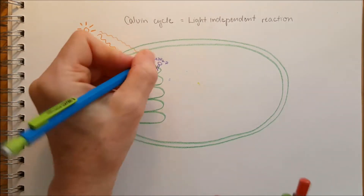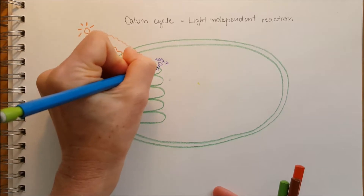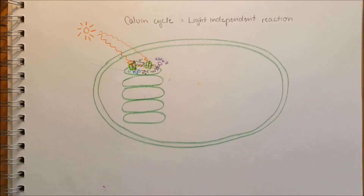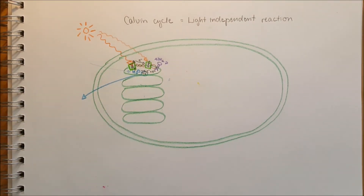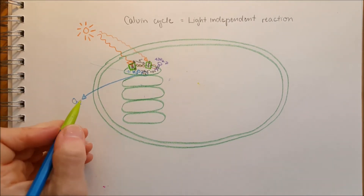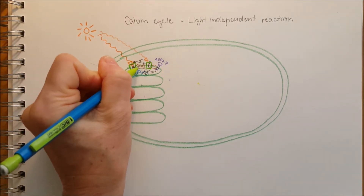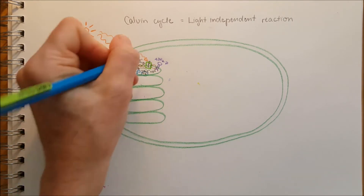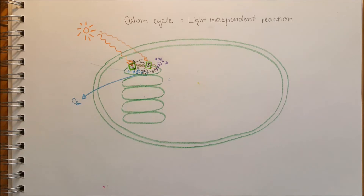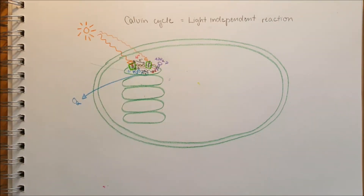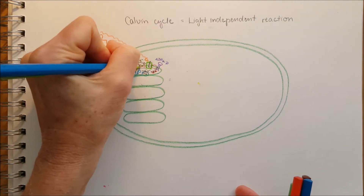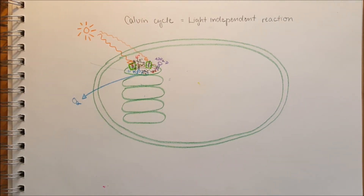The water molecule comes from outside and is necessary for the light reaction. It splits into electrons, protons, and oxygen. The oxygen, as a waste product, leaves the chloroplast through the stomata. The electron is then picked up by the high-energy electron carrier NADP+.